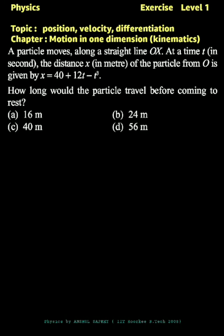A particle moves along a straight line. At a time t, the distance x is given by x equals 40 plus 12t minus t cubed. We have to find out how long would the particle travel before coming to rest.